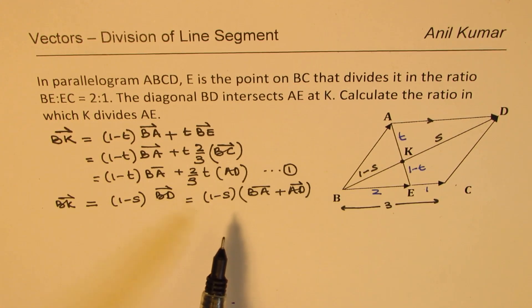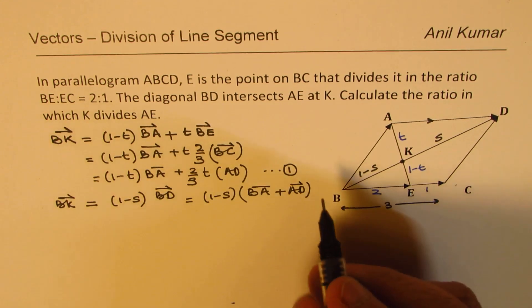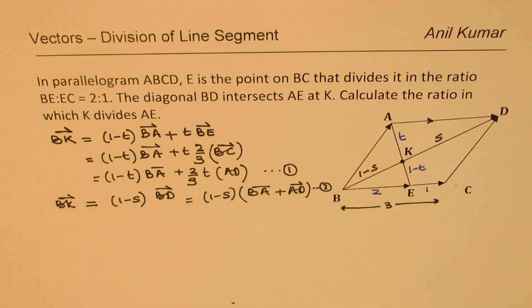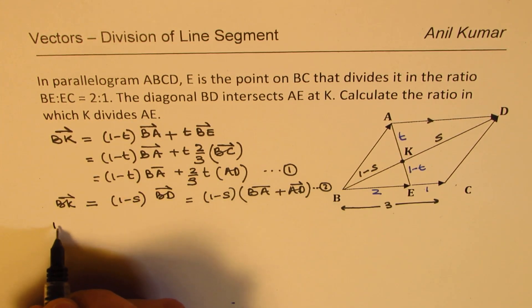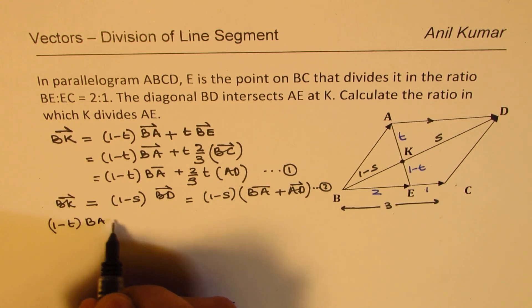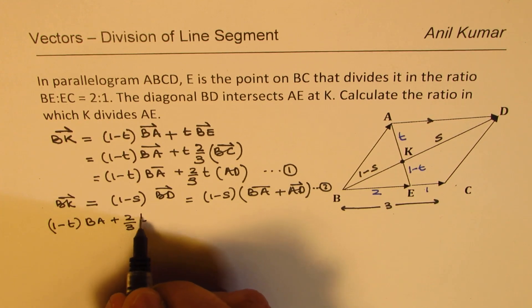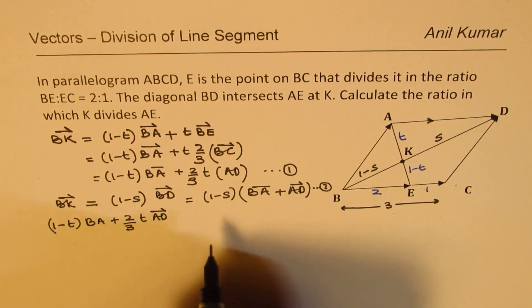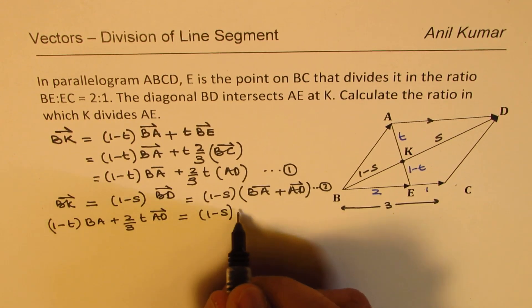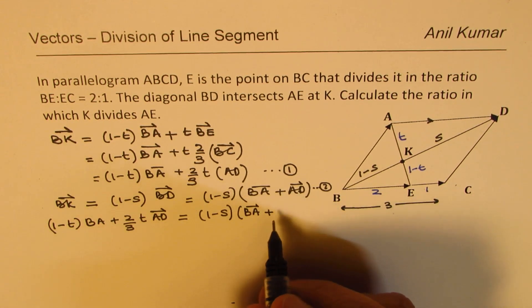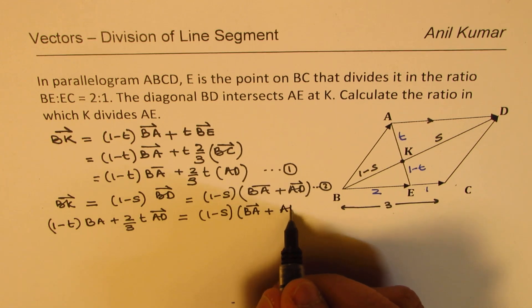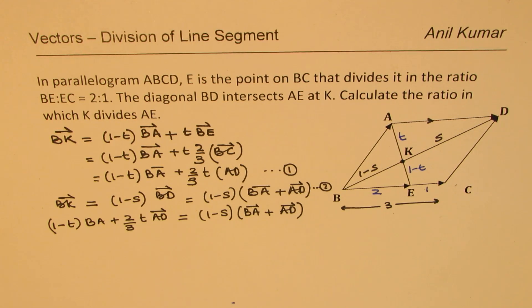So now we have two expressions, both for BK in terms of BA and AD. We can equate these. So this is our second equation. So equating these, what do we get? We have 1 minus T times BA plus 2/3 T times AD is equal to 1 minus S times BA plus AD. So now let's open these brackets and bring S and T together. Let's bring everything on left side and then try to solve it.